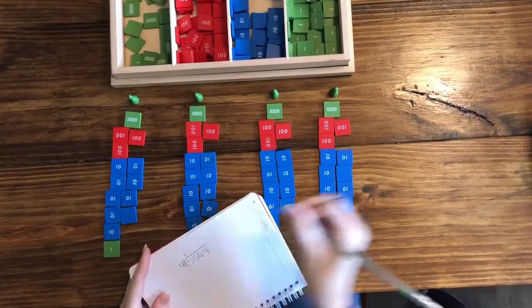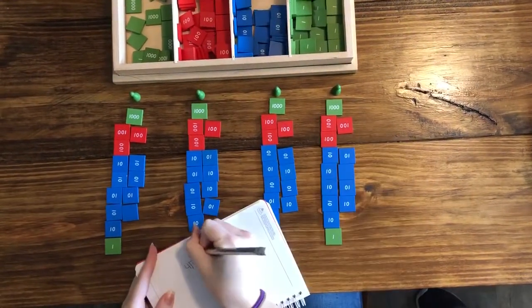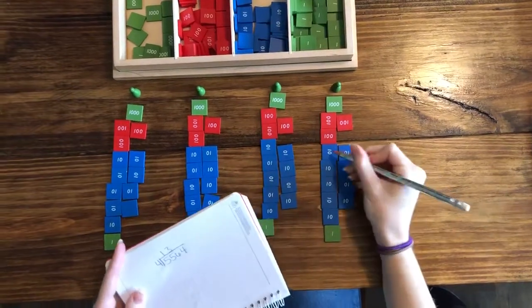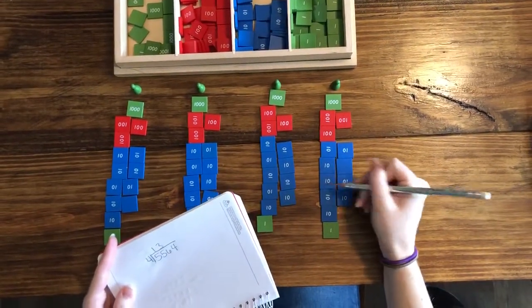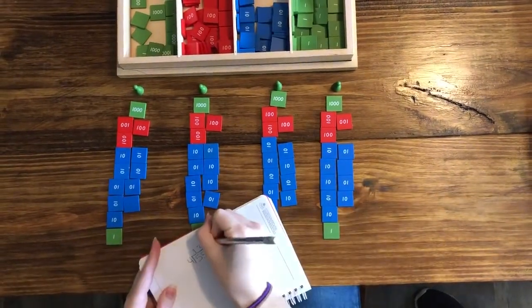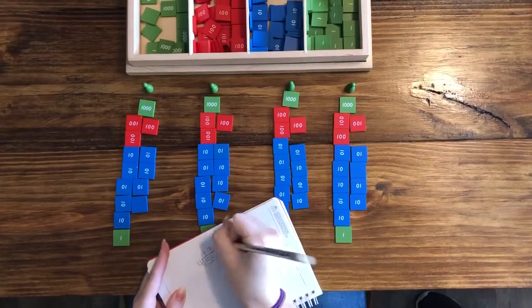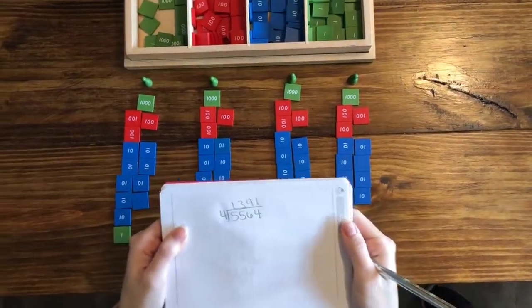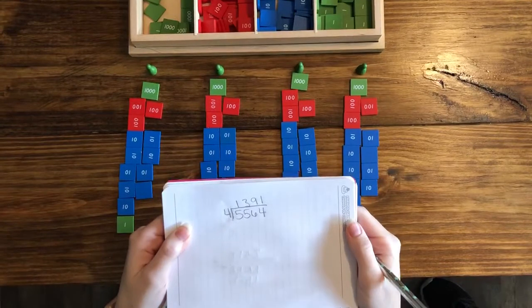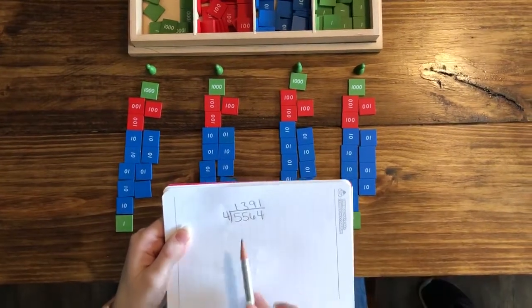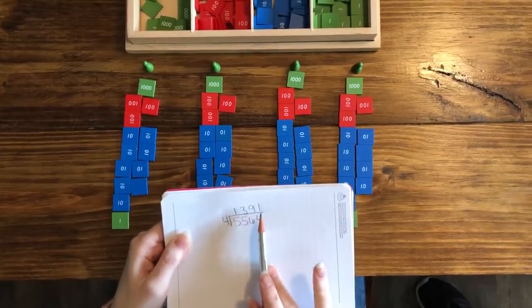1,000, 1, 2, 300, 1, 2, 3, 4, 5, 6, 7, 8, 9 tens, and one unit. So 5,564 divided by 4 is 1,391.